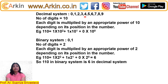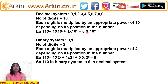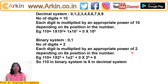In the decimal system, the base is 10, meaning there are 10 digits, and each digit is multiplied by an appropriate power of 10 depending on its position. So 110 is 1×10² + 1×10¹ + 0×10⁰. In binary, the base is 2, and each digit is multiplied by an appropriate power of 2. So the same 110 in binary is 1×2² + 1×2¹ + 0×2⁰ = 6 in decimal.